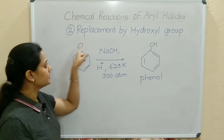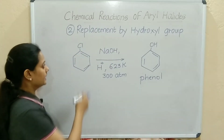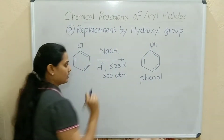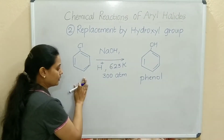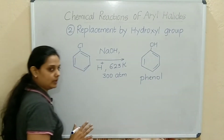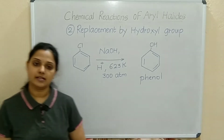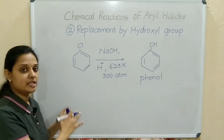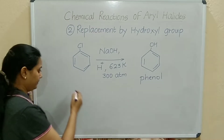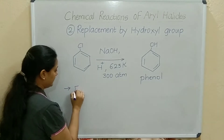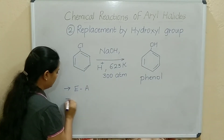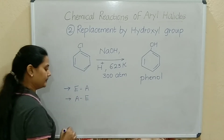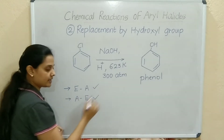So in replacement by hydroxyl group, the chlorine is replaced by hydroxyl group — conversion of chlorobenzene to phenol. Now here two types of reactions are there: one is elimination-addition, and the other is addition-elimination.